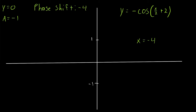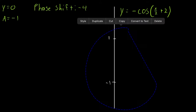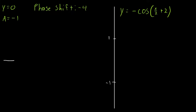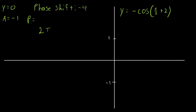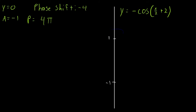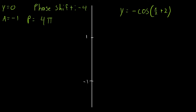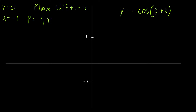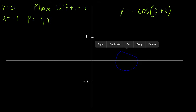Since the phase shift is negative 4, I'll adjust the axes to give more room on the negative part of the x-axis. The period P is 2 pi divided by 1/2, which equals 4 pi. Since the period 4 pi is much bigger than the phase shift negative 4, the period will spend plenty of time in the positive part of the x-axis, so I'll actually move the axes back to a more balanced position.